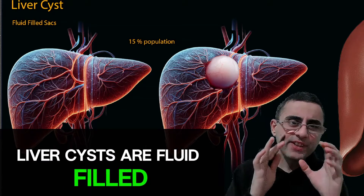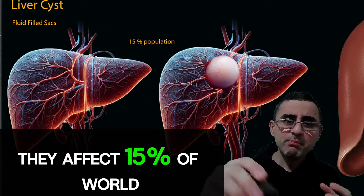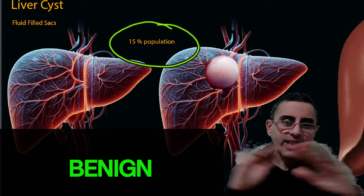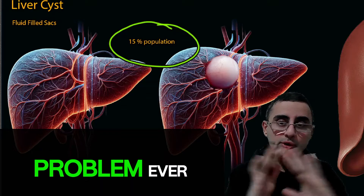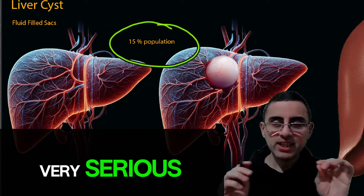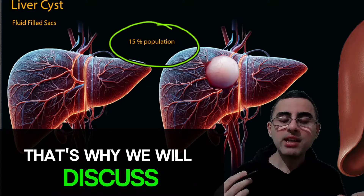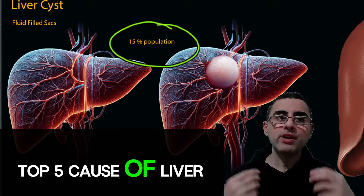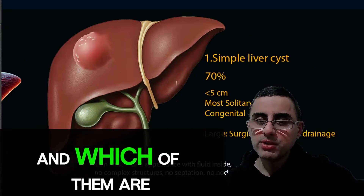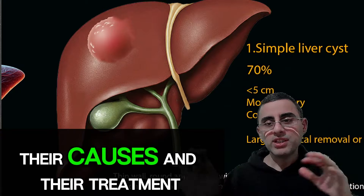Liver cysts are fluid-filled sacs in the liver. They affect 15 percent of the world population and most of them are benign and do not cause any problem. But some of them are very serious and require medical treatment. We will discuss the top five causes of liver cysts — which are very serious and which are benign — their causes and their treatment.